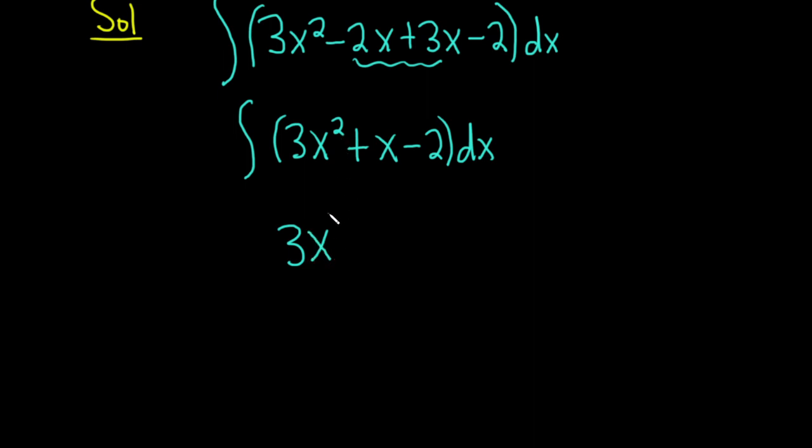This will be 3 and then x, 2 plus 1 is 3. And then you divide by the result. 3. Plus there's a 1 here, so you add 1 and divide by the result. So x² divided by 2.